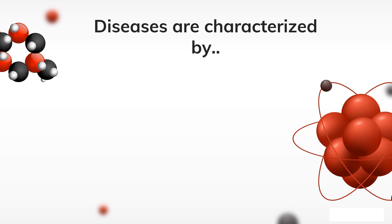Diseases alter body structures and functions in characteristic ways. They are characterized by a recognizable set of signs and symptoms. A person with the disease may experience symptoms, which are subjective changes in body functions that are not apparent to an observer.